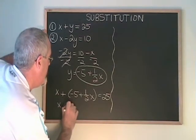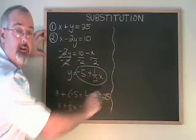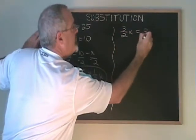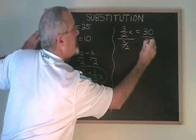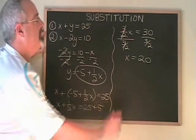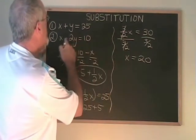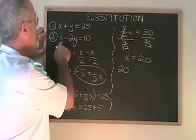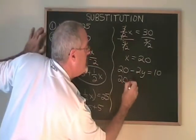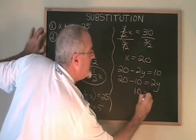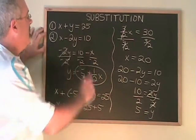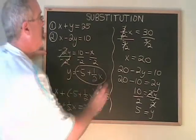I have x plus one-half x equals 25, and if I move the minus 5 to the other side it becomes plus 5. This gives me three-halves x equals 30. If I divide both sides by three-halves, x is isolated and is equal to 20. Now I substitute x equals 20 into either of the original equations to find my y. If I use equation 2, I get 20 in the x position minus 2y equals 10. Let's move the 10 to the left and the minus 2y to the right. We get 20 minus 10 equals positive 2y. 10 equals 2y. Divide both sides by 2 to isolate my y, and I get y equals 5. The answer to this substitution problem, and the point where these two lines cross, is (20, 5).